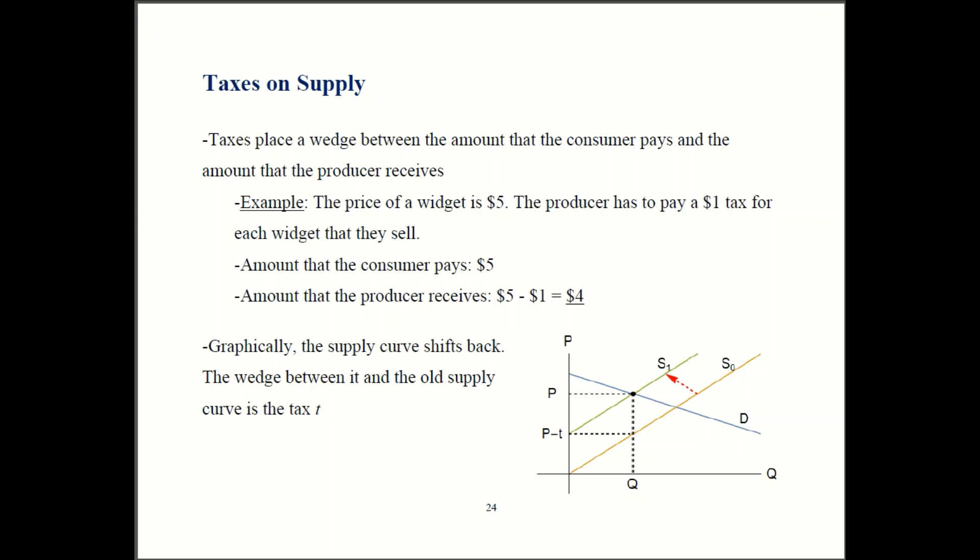A lot of this will be very similar to what we saw earlier. Taxes place a wedge between the amount the consumer pays and the amount the producer receives. So let's go back to our example, the five dollar widget and a one dollar tax. This time however the tax will be paid by the firm.